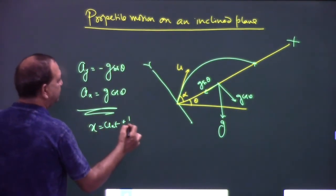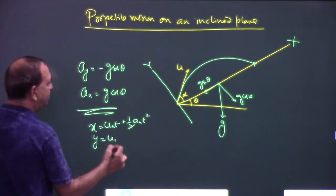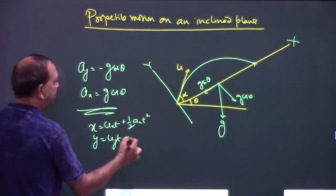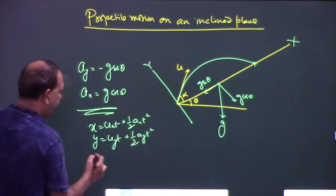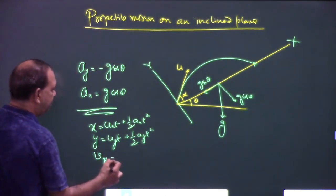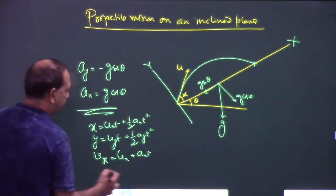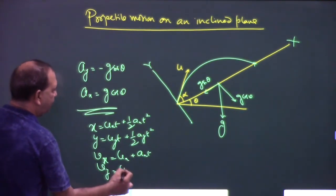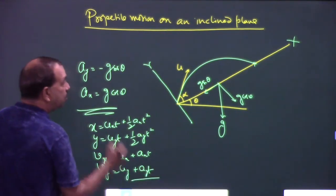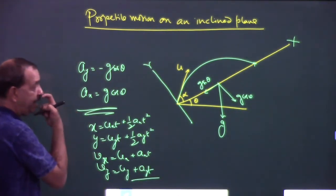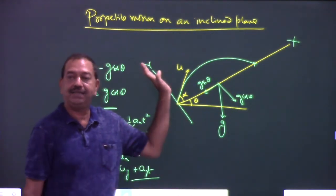half ax·t², y is equal to uy·t plus half ay·t². vx is equal to ux plus ax·t, vy is equal to uy plus ay·t. Nothing else to do — take it as simple two-dimensional motion. This is your x-axis, this is your y-axis.